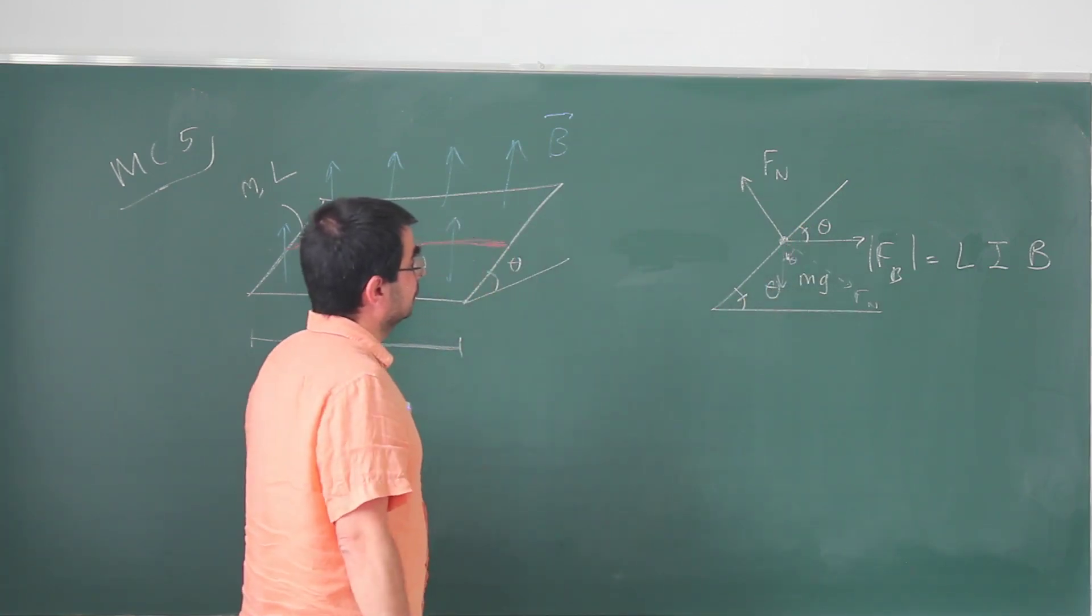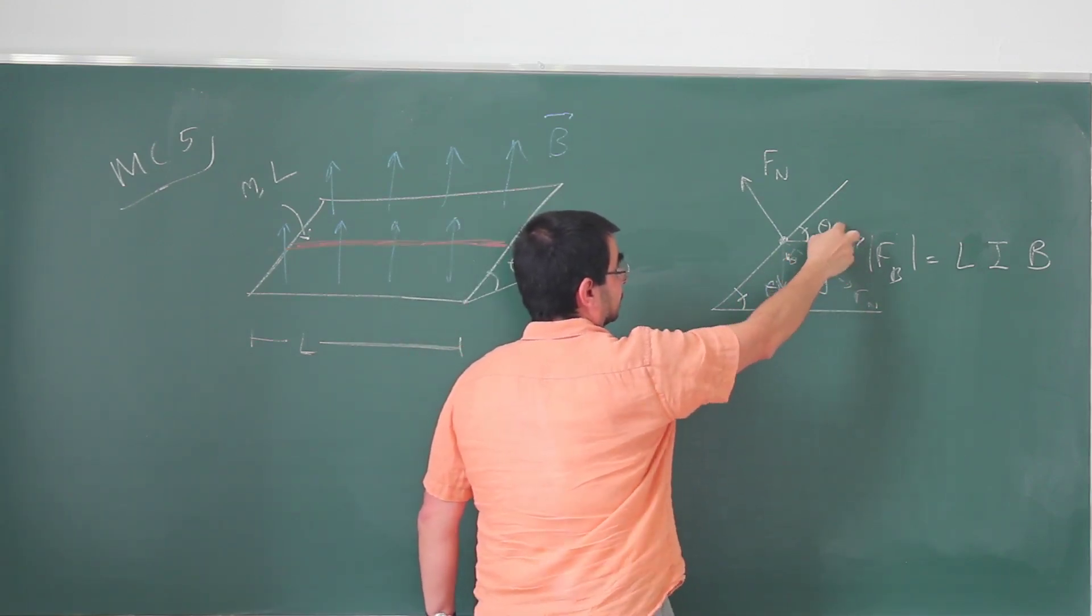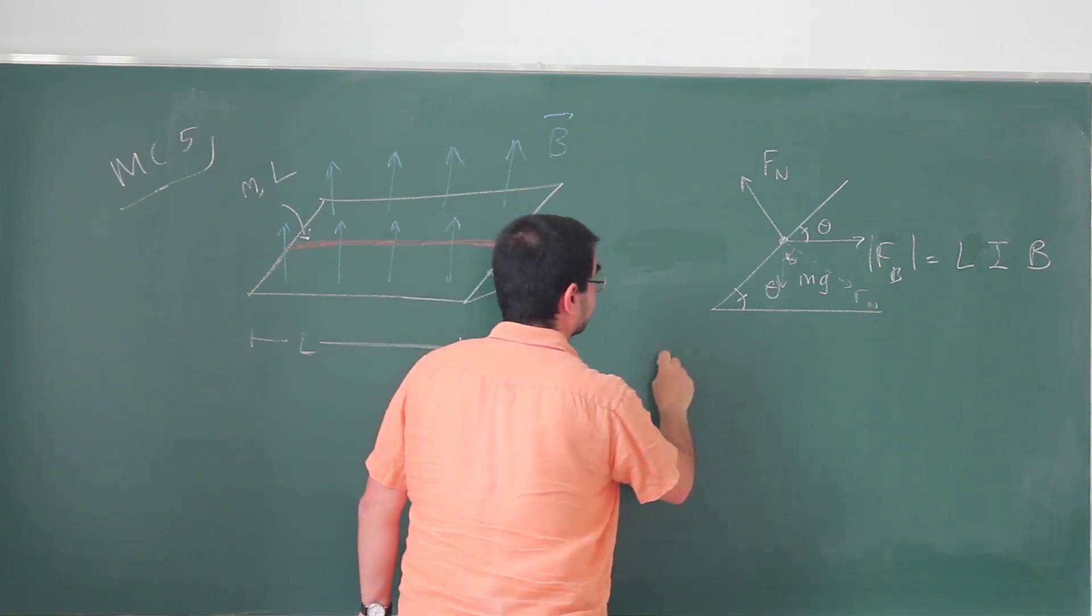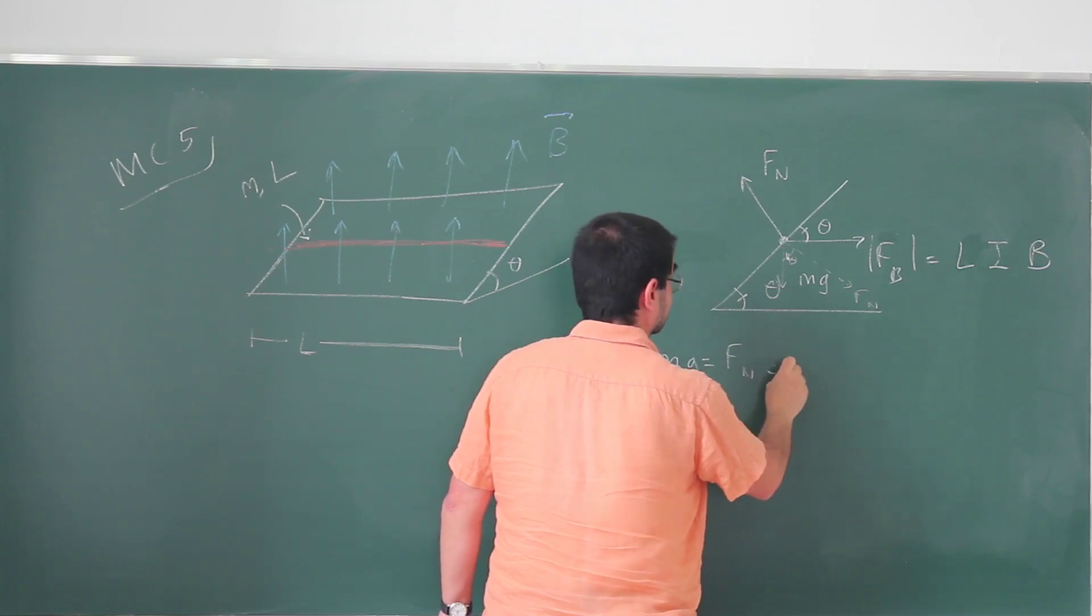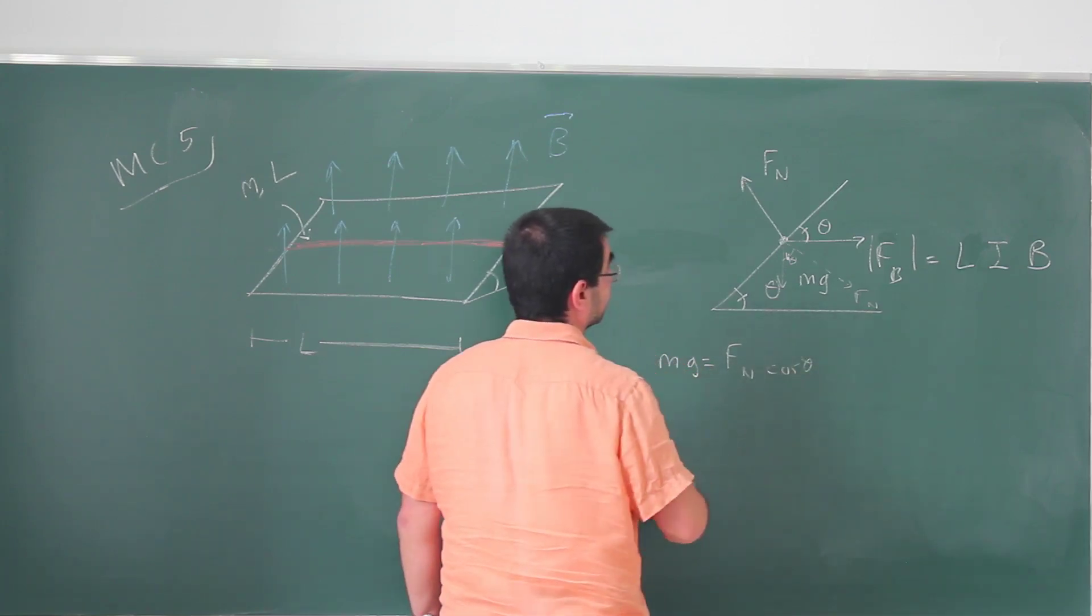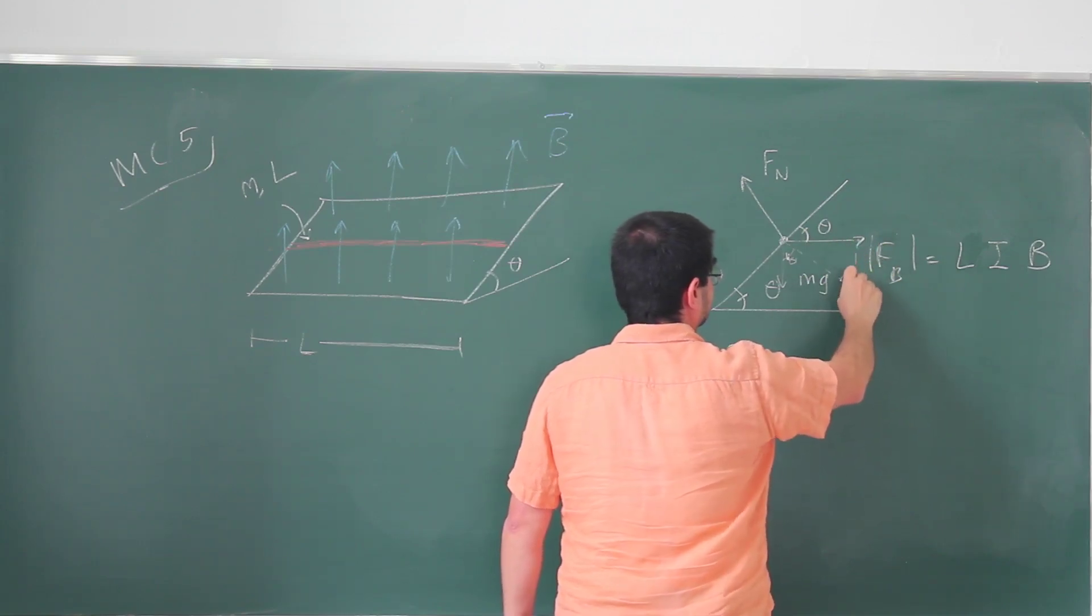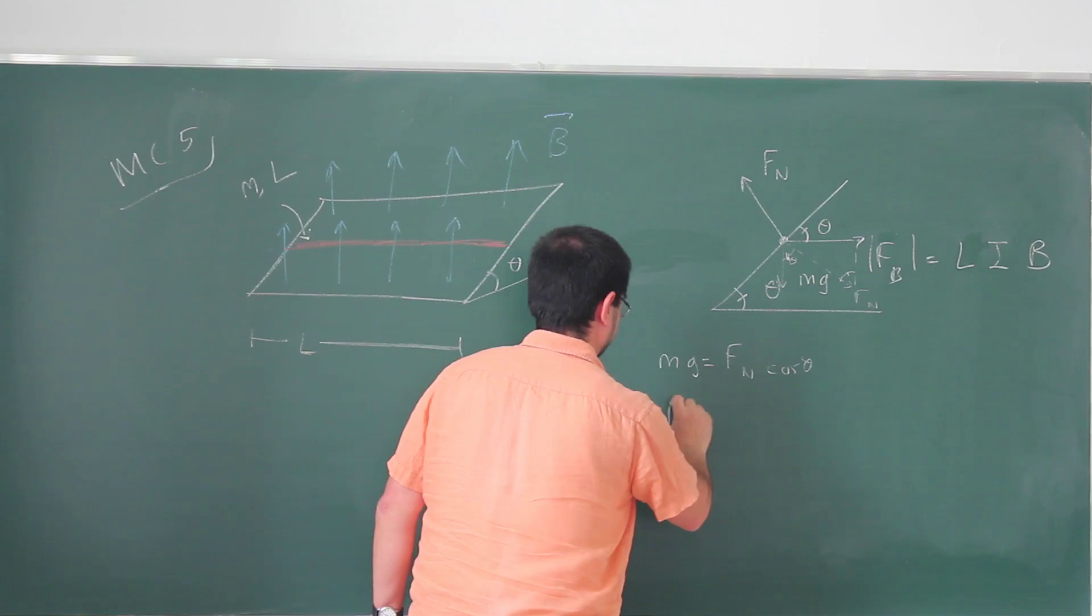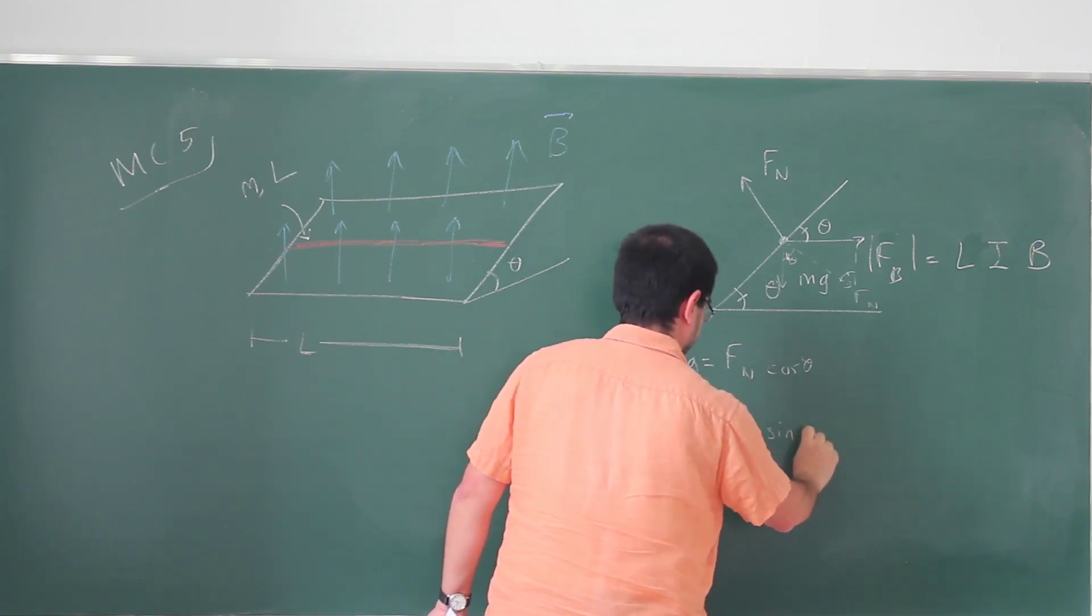Because these two angles add up to 90, these two angles add up to 90. This angle must be the same as this one. But from that one, I can actually write that Mg is Fn times cosine theta. And now if I look at this triangle, because this angle is also theta, Fb is Fn sine theta.